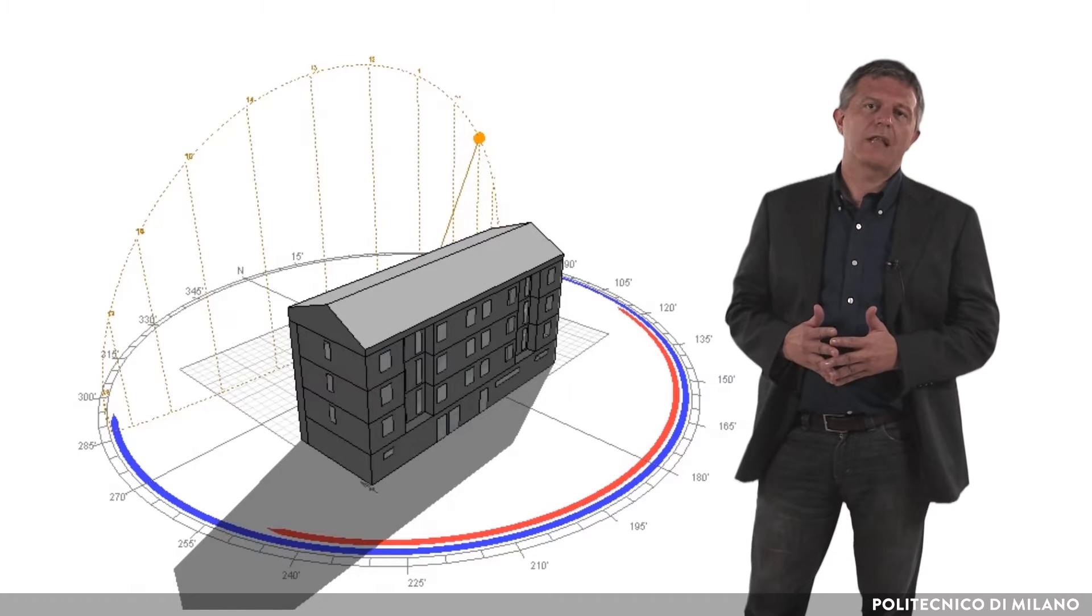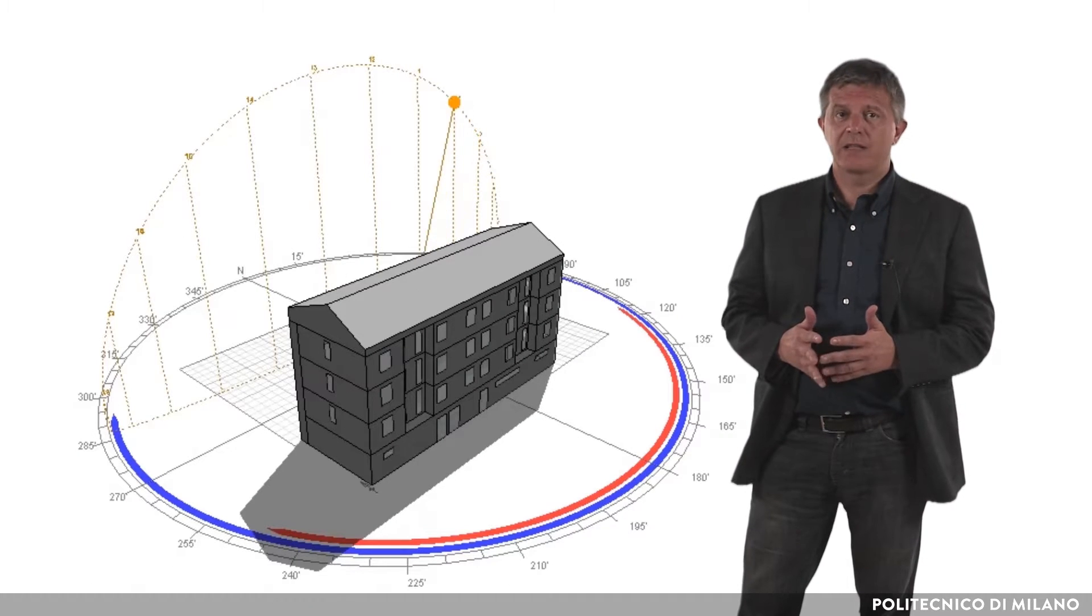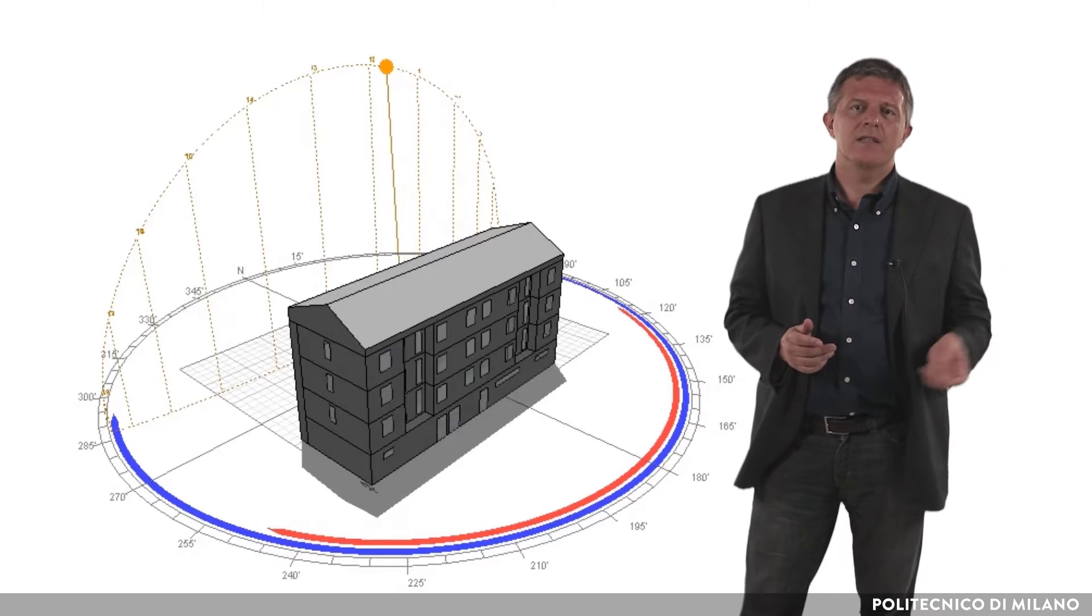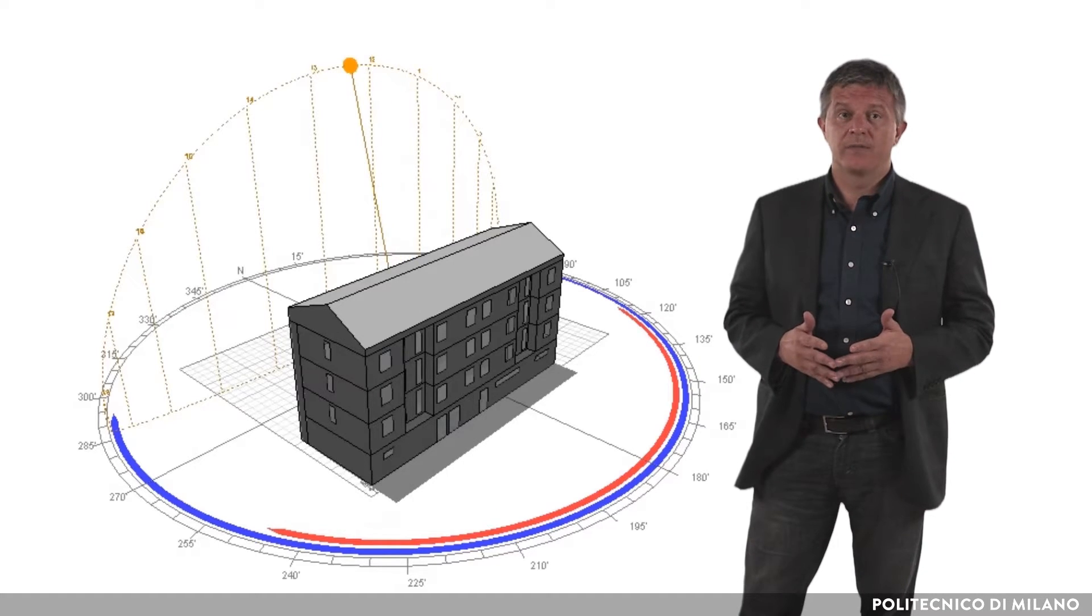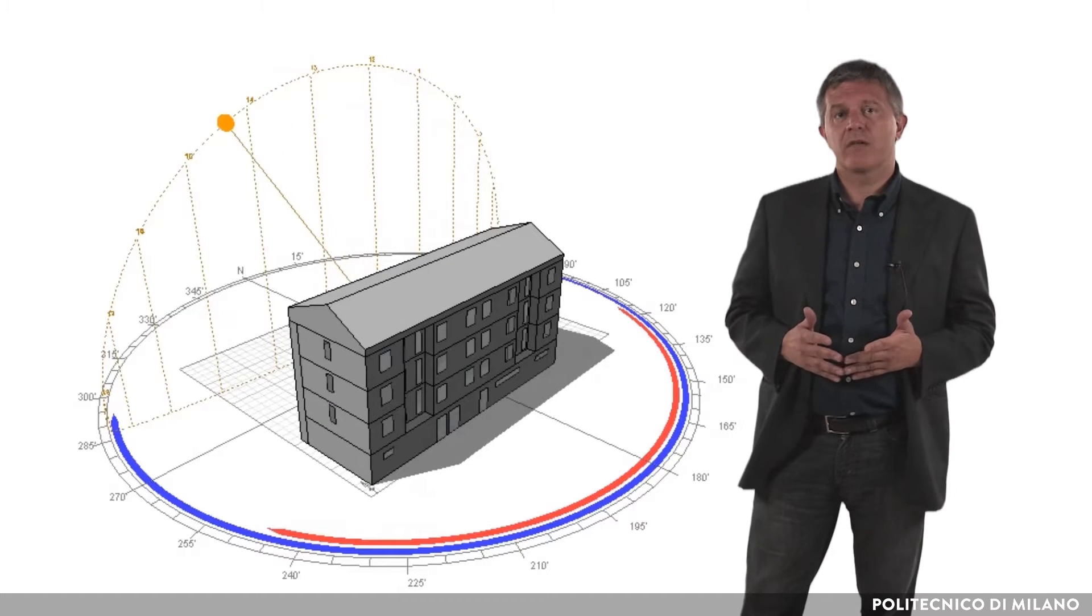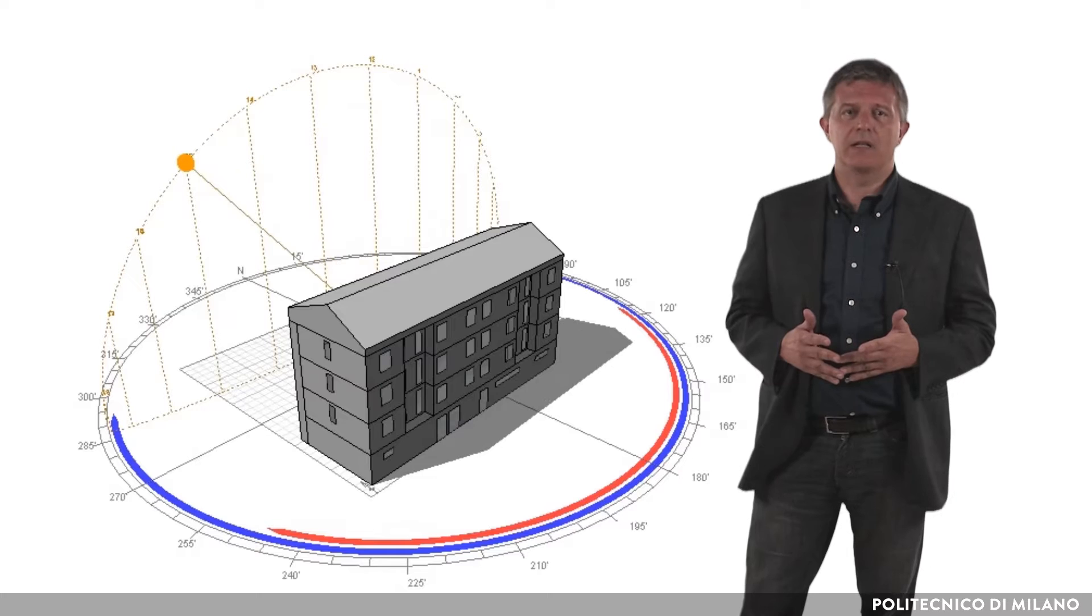Solar Geometry studies the movement of planets around the Sun and is also used to calculate the apparent solar paths seen by an observer on Earth. Knowledge of Solar Geometry is important to understand the interactions between Sun and buildings.